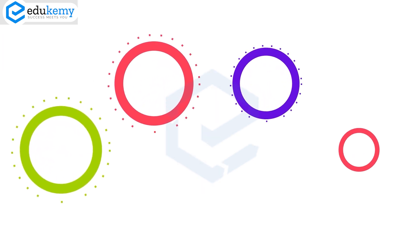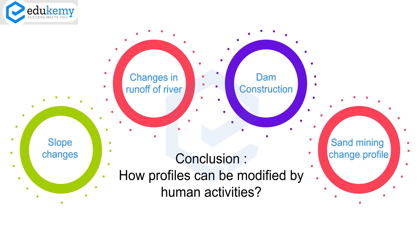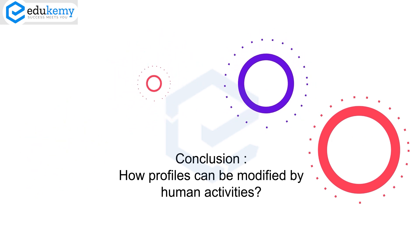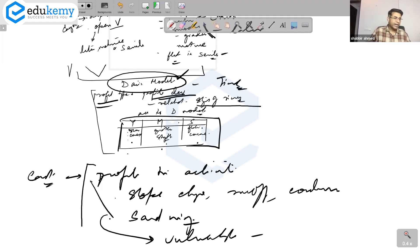Human modifications include slope changes, changes in river runoff, and construction of dams — all of which can change the river profile. You can also talk about how sand mining changes the profile, the consequence of which is that rivers become vulnerable to breaching their banks, increased floods, and siltation downstream. End the answer with this applied aspect.